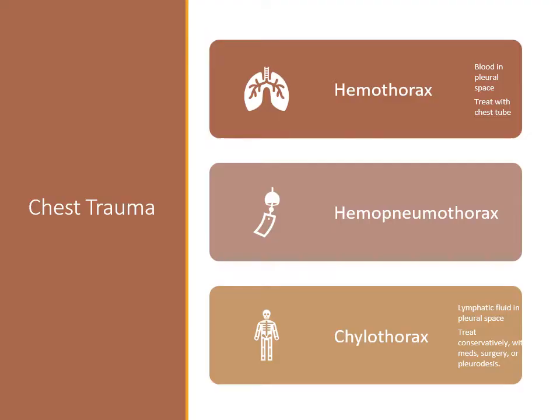Hemothorax is an accumulation of blood in the pleural space resulting from injury to the chest wall, diaphragm, lung, blood vessels, or mediastinum. The patient with a traumatic hemothorax requires immediate insertion of a chest tube for evacuation of the blood, which can be recovered and re-infused for a short period of time after the injury. When it occurs with a pneumothorax, it is called a hemo-pneumothorax.